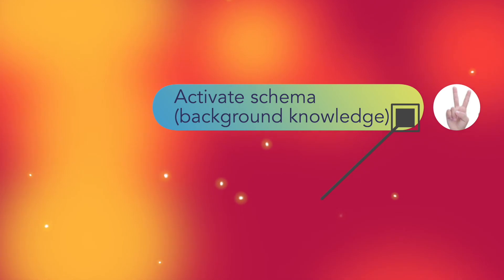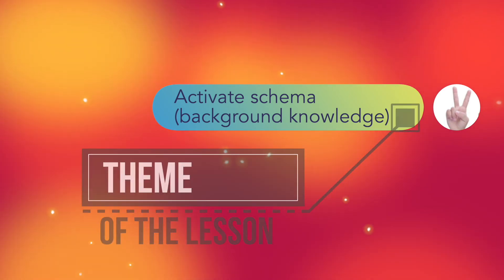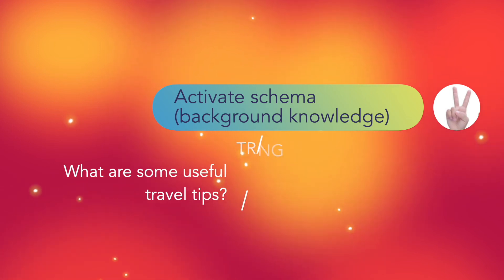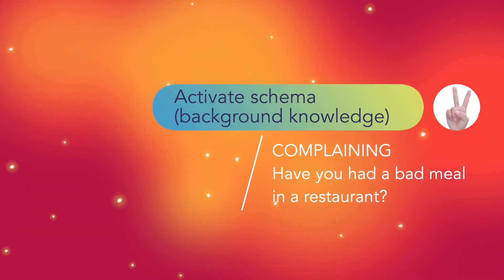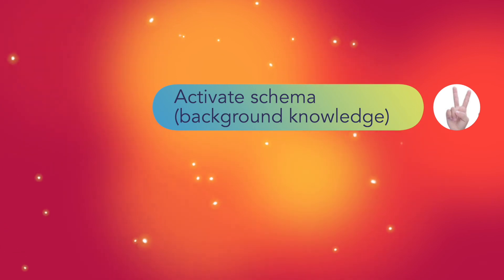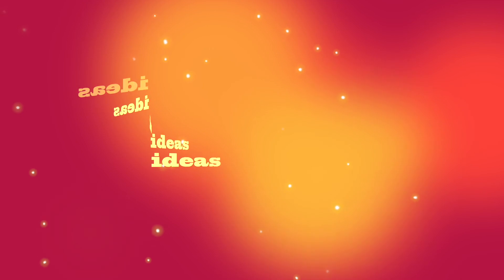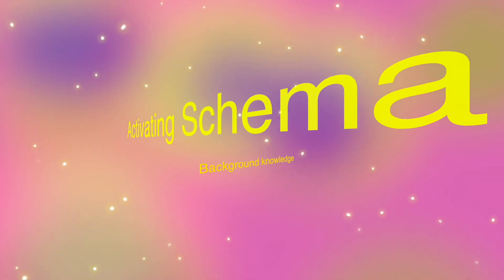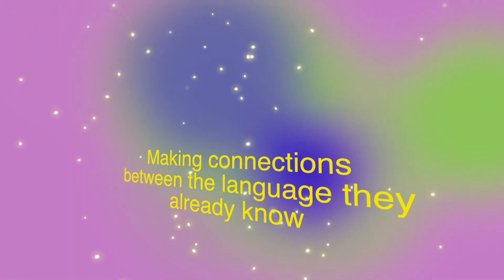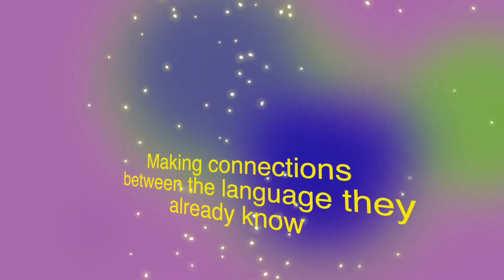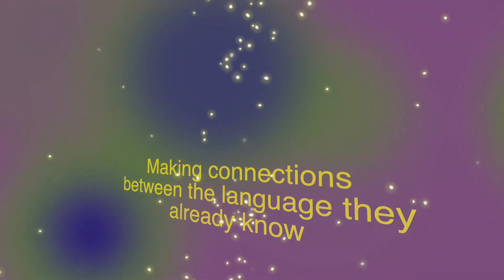So in the beginning we need to activate that background knowledge. How can we do this? Think of what the theme of the class is. For example, if it is travel we could start with some general travel chat, or if it's complaining we could talk about bad experiences or things to complain about. We can generate ideas that we can even use later in the class with our target language. The most important thing is that we're activating those concepts in their brain so they're starting to make connections between the language they already know and the concepts they already understand, and we're going to add to that with our target language.